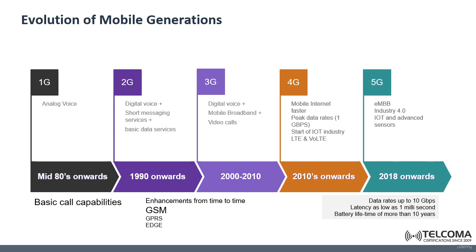GSM stands for Global System for Mobile Communications. It enabled data transfer on top of voice communication at speeds of 30 kilobits per second, which of course by today's speed standards is something negligible. The 2G played a vital role in the evolution of mobile technology and provided voice call services and continuity while moving and even while roaming during travel.